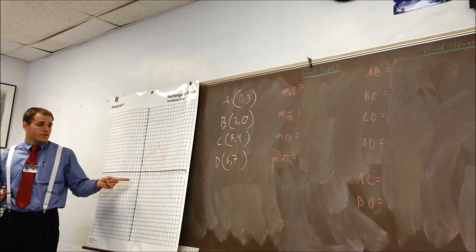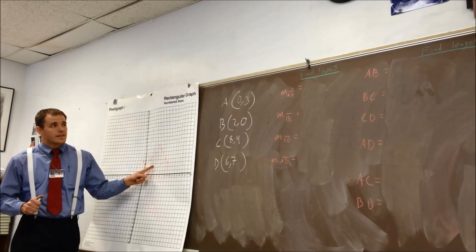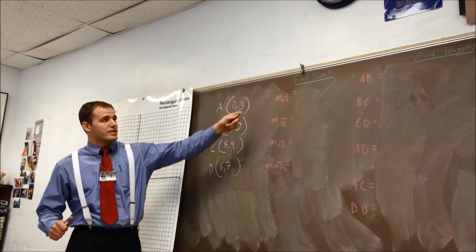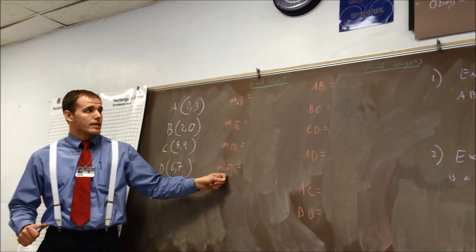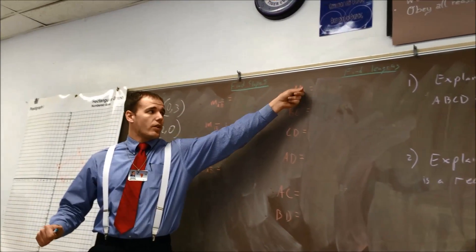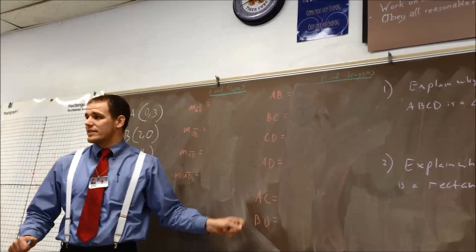In order to do this, first you're going to have to graph it, then with your team I want you to find the slope of AB, the slope of BC, CD and AD. Then you're going to have to find the lengths of all six of these sides.